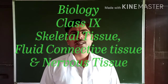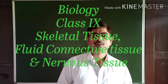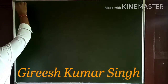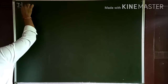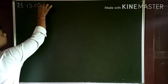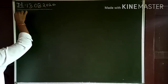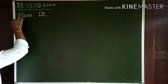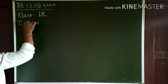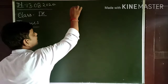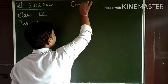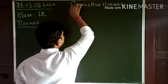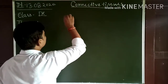Hello everyone. Today again I am with you for the second chapter of biology, that is tissue, going on in class 9. The date is 13th August 2020. Topic going on: Class 9th, Tissues. Which type of tissue are you studying? That is the connective tissue. Under connective tissues, today we study about the skeletal tissue.